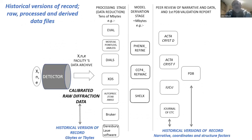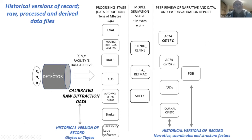In terms of a grand diagram showing the routes we take: we start with our different probes — X-ray, neutron, electron — and our appropriate detector. The facility increasingly provides the data archive for the calibrated raw diffraction data, and at that point I think we can properly declare this a historical version of record in itself. The files reach gigabytes or even terabytes for X-ray laser data; Philip Meyer in Uppsala is providing an archive for X-ray laser terabyte-level file storage.